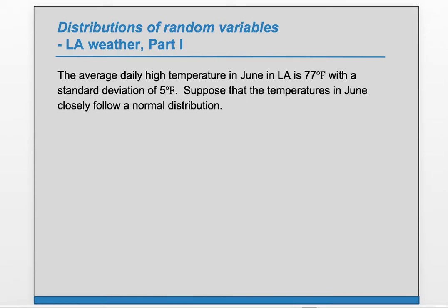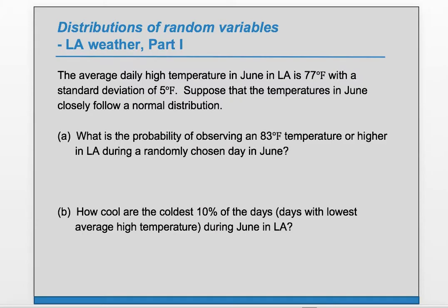The average daily high temperature in June in LA is 77 degrees Fahrenheit with a standard deviation of 5 degrees. Suppose that the temperatures in June closely follow a normal distribution. The first thing to note is that we're going to be using normal approximation and we're allowed to do that because in the problem it says that the temperatures follow a normal distribution.